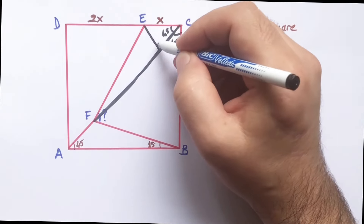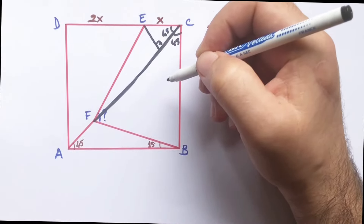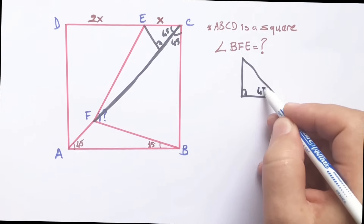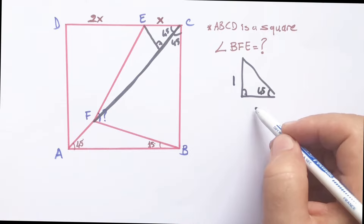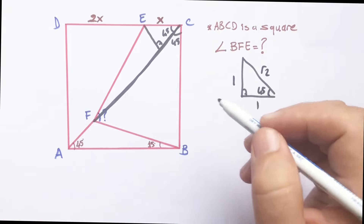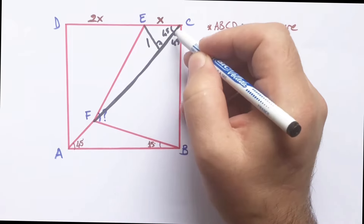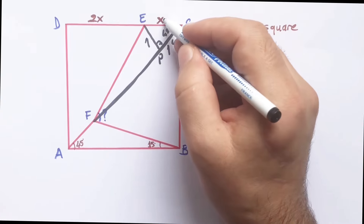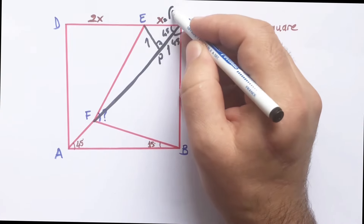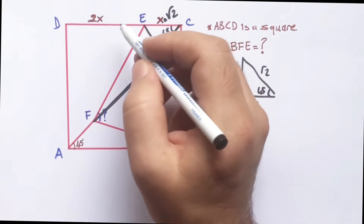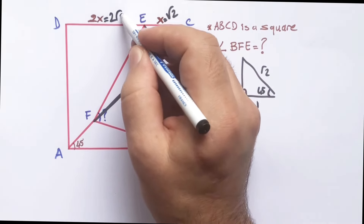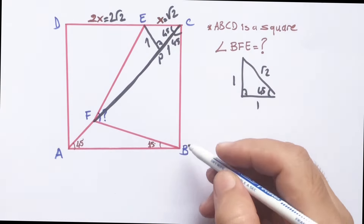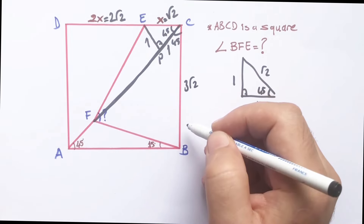Let's draw a perpendicular line across to 45 degrees. Let's remind you: if we have an isosceles right triangle, and there is one unit across to 45 degrees, the hypotenuse must be root 2. So if there is a one unit across to 45 degrees, the hypotenuse must be root 2. Therefore, this length must be 2 root 2. We know that these two sides must be equal, so here is 3 root 2.